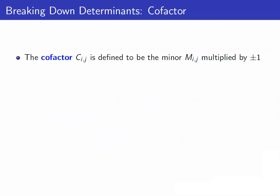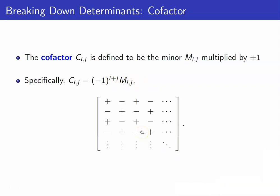Another term we have to discuss is cofactors. The cofactor is just the minor multiplied by either plus or minus 1, determined by the position ij. Specifically, Cij equals negative 1 raised to i plus j times your minor Mij. This means you have an alternating pattern of pluses and minuses: if i plus j is even you get positive 1, and if i plus j is odd you get negative 1.